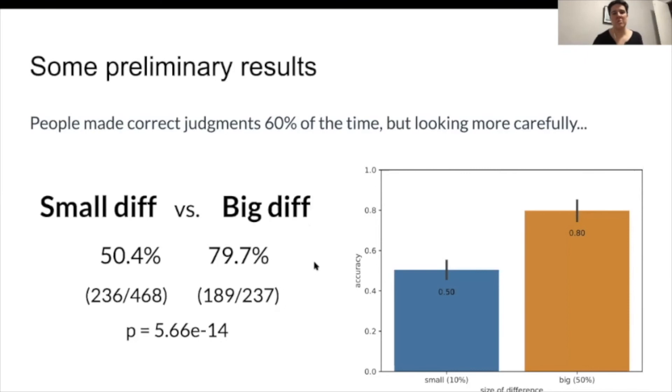So about a 50% difference in the underlying mask rate. For a small difference, which consisted of about a 10% difference, there was actually barely any difference at all. In fact, people are sitting pretty much at random chance in their judgments.